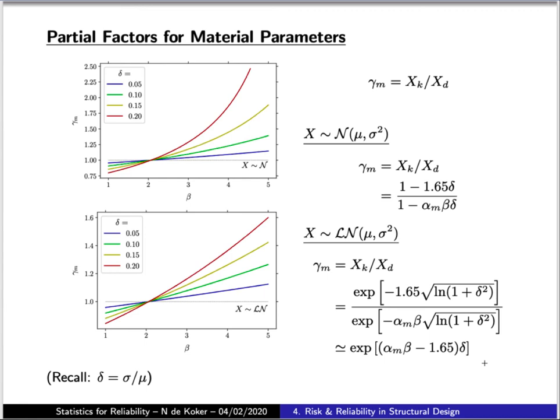If we again plot the corresponding partial factors as a function of beta and our coefficient of variation for a log-normally distributed material parameter, then for a target beta value of 3, we get these partial factor values. And for a value of 3.8, you'll get values over there, depending on how uncertain your parameter is. That concludes our lectures on structural reliability. Thank you.